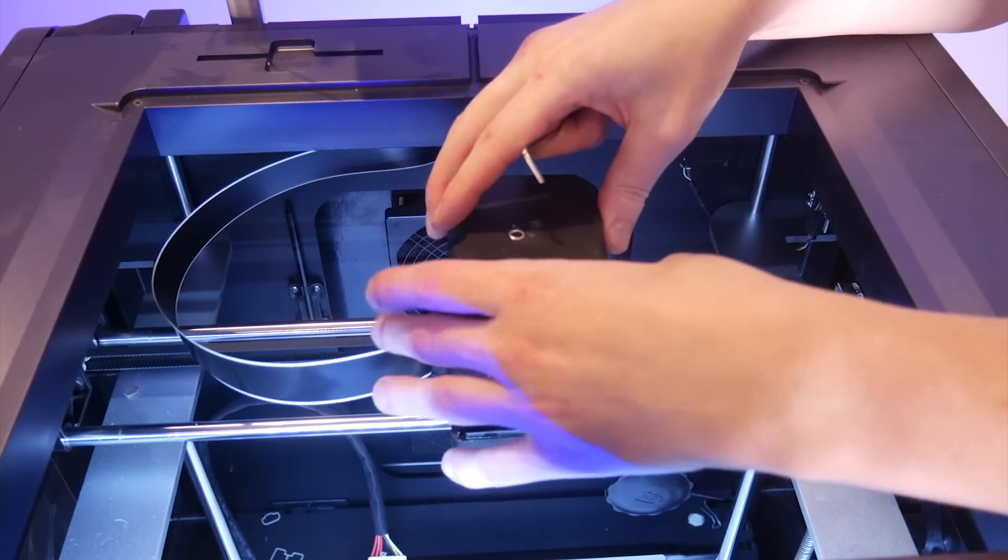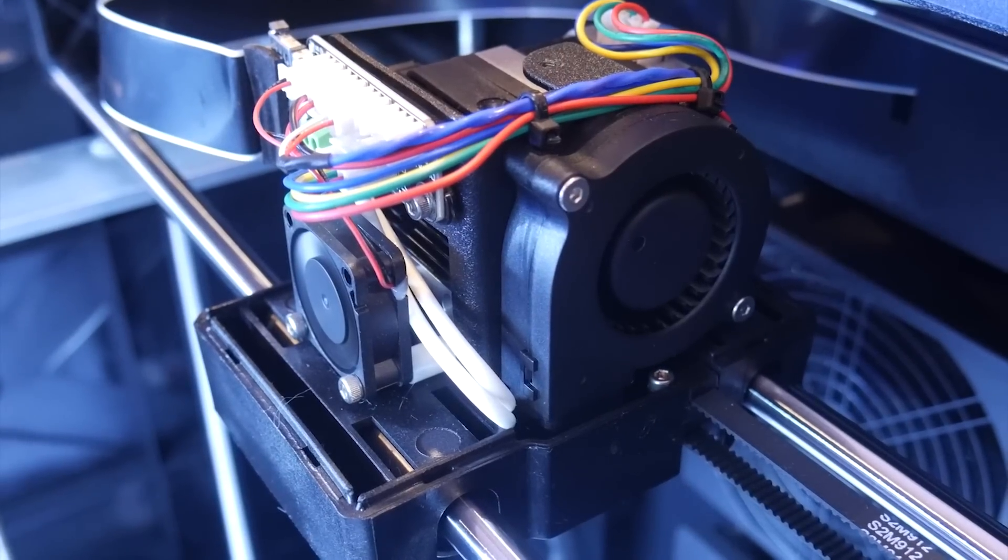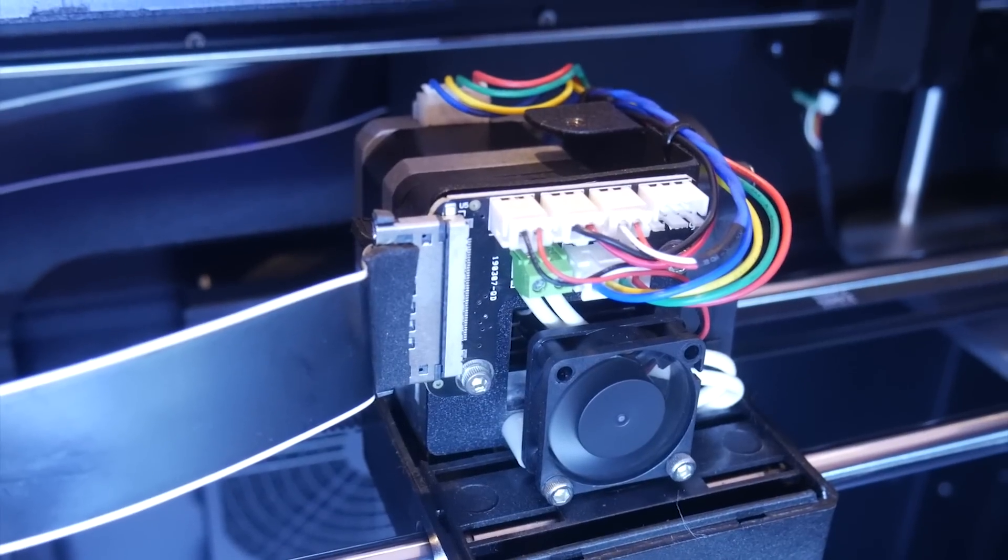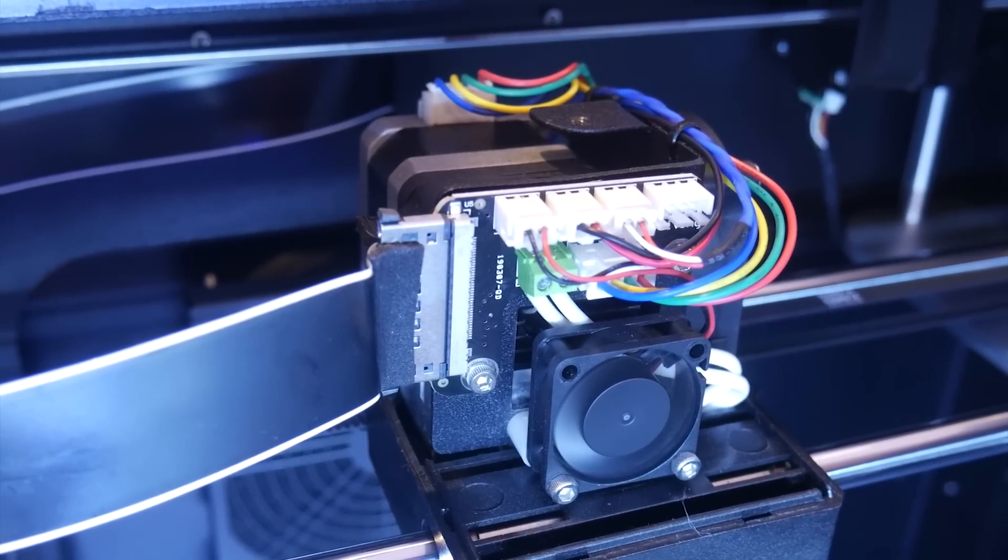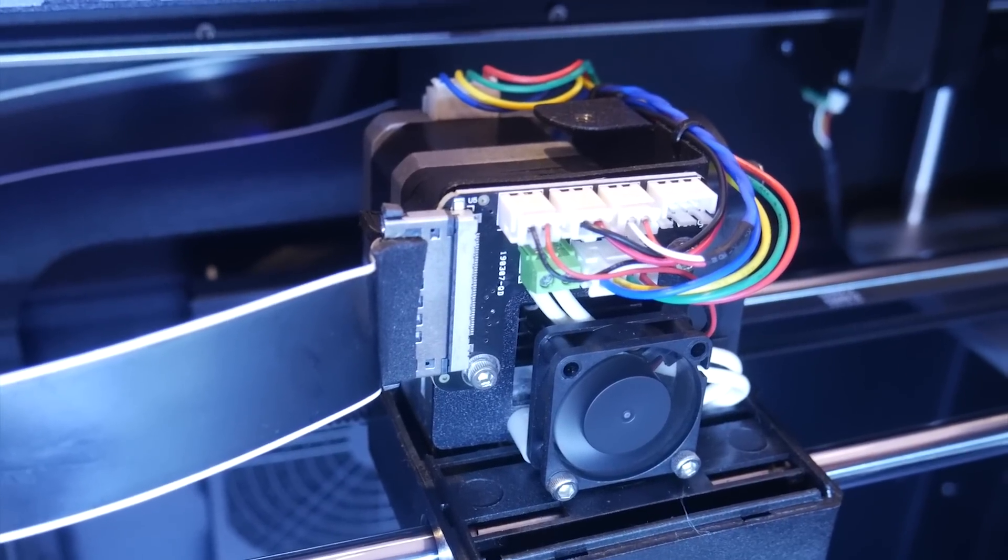While we're here, let's take a look at what's under the extruder cover. There's a large blower parts cooling fan, a dedicated hot-end heatsink fan, a direct-drive extruder, and a daughterboard for all the aforementioned connections with an attached ribbon cable to keep everything tidy.